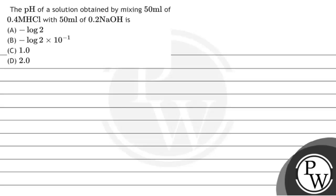Hello children, let's have a look at this question which says: pH of a solution obtained by mixing 50 ml of 0.4 molar HCl with 50 ml of 0.2 molar NaOH is. Options are minus log 2, minus log 2 into 10 raised to the power minus 1, 1.0, or 2.0.